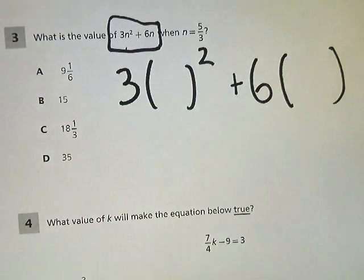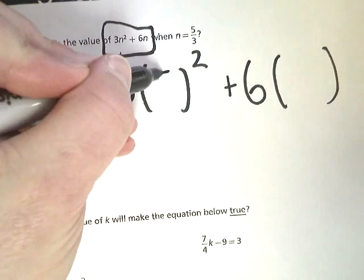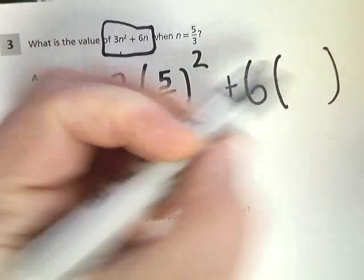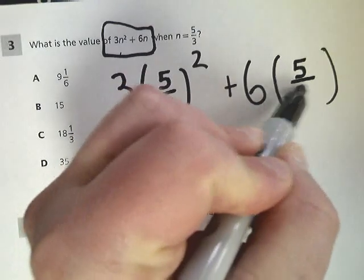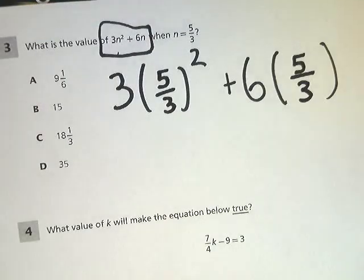So the squared goes after the parentheses here. Now, all you do is plug in that 5 thirds into both those spots. This will save you some time doing it this way.